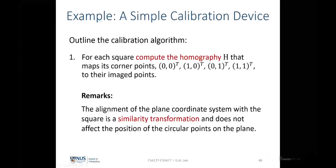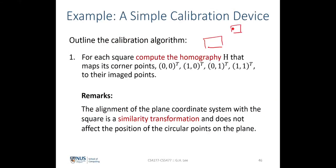Now let's look at how the calibration can be done. We assign a frame on the 3D image pattern, which is a square, and call this (0,0). If this is the x-axis, we call the corners (1,0), (0,1), and (1,1). We assign a set of coordinates on the 3D imaging device up to scale. The scale is not important because what we want to find is the homography that relates the projection of the imaging device onto the image.